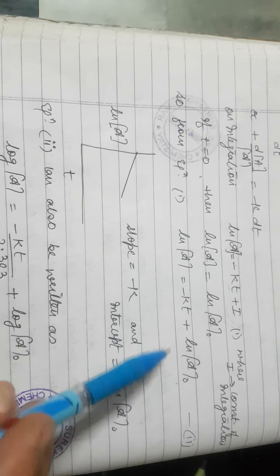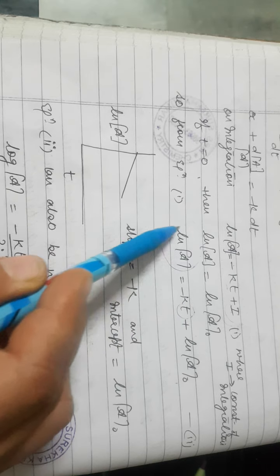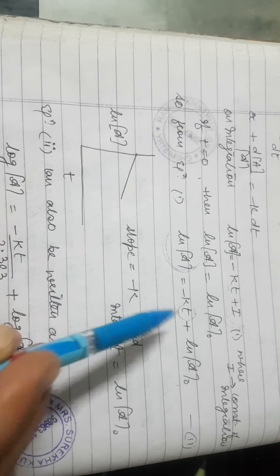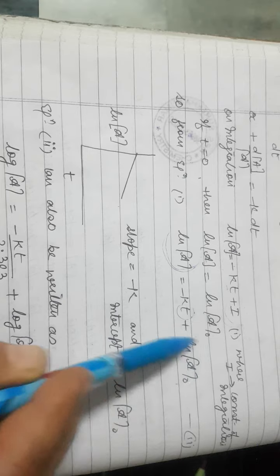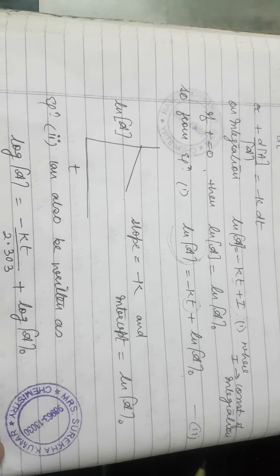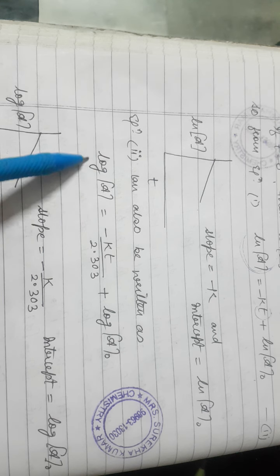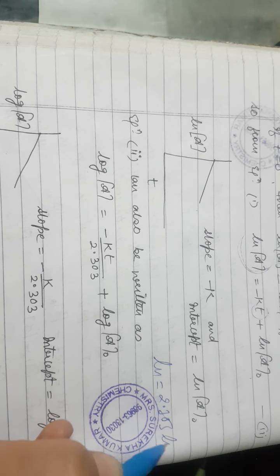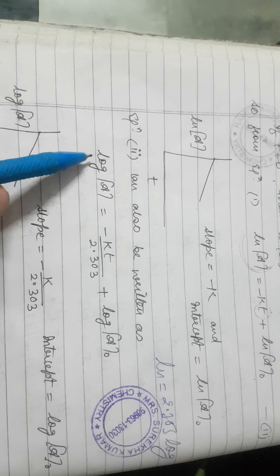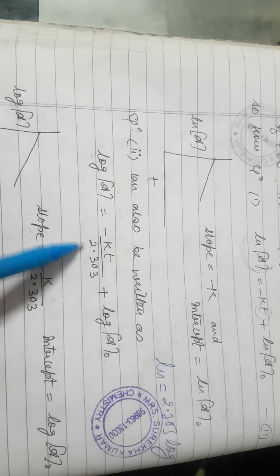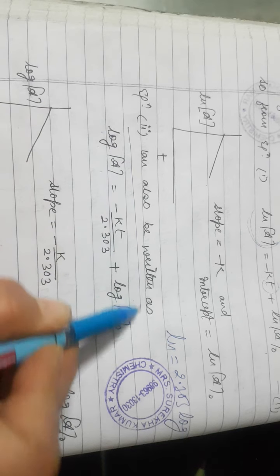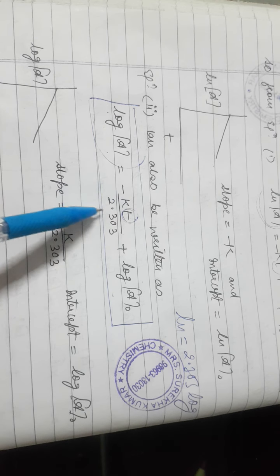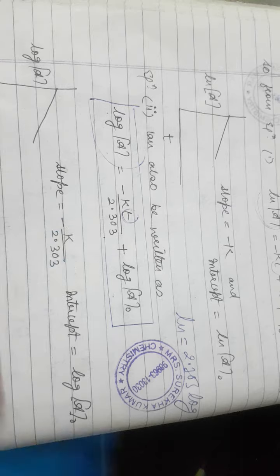Now plot ln A versus T — since there is a minus sign, the graph has a negative slope of −K, and the intercept is ln A₀. We can also write this using log (base 10): since ln = 2.303 × log, we get log A = −KT/2.303 + log A₀. In this case, the slope is −K/2.303.